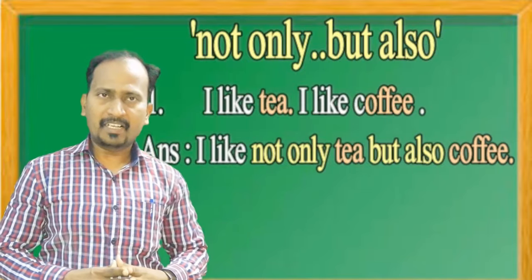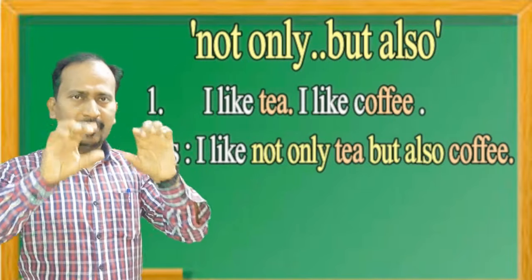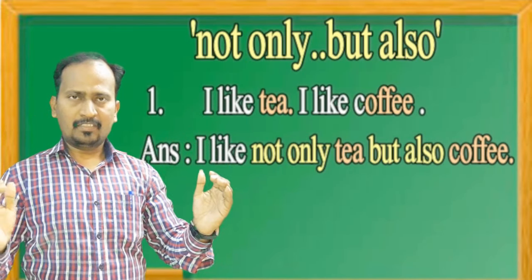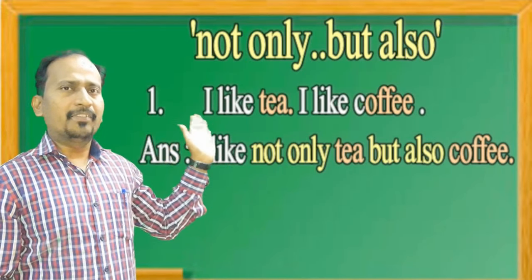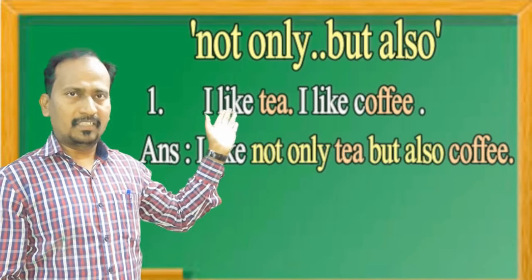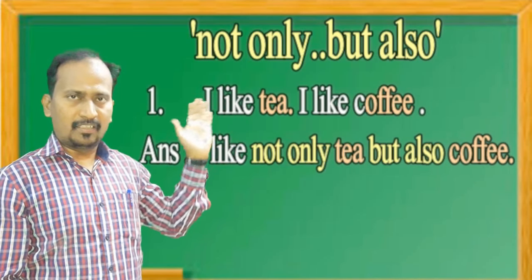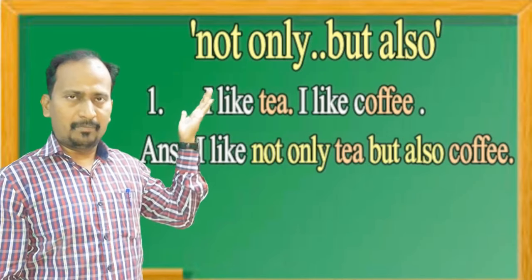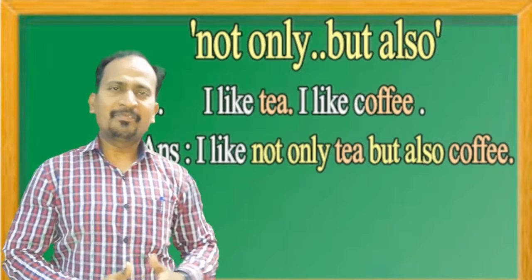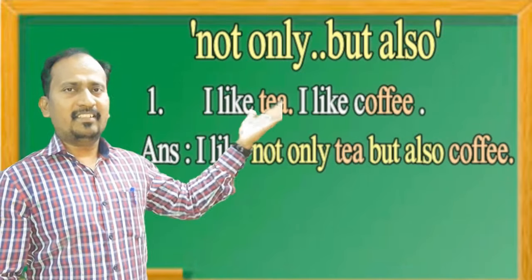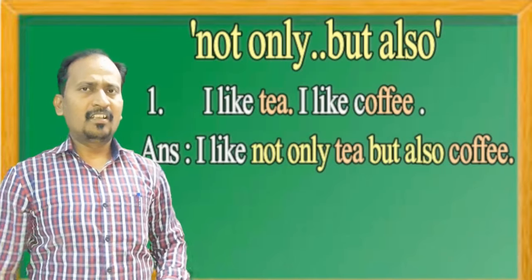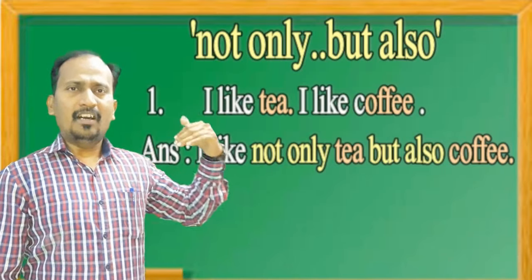So what you understand here is: if two separate sentences are given, underline the different words. Place 'not only' before the underlined word in the first sentence, and join it with 'but also' followed by the underlined word from the next sentence.